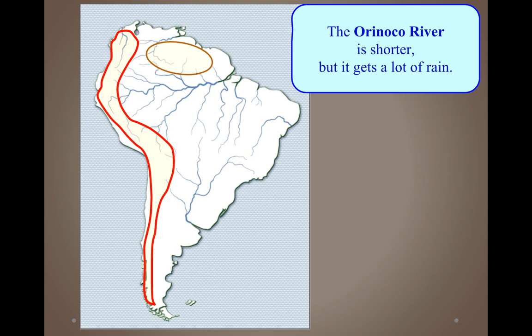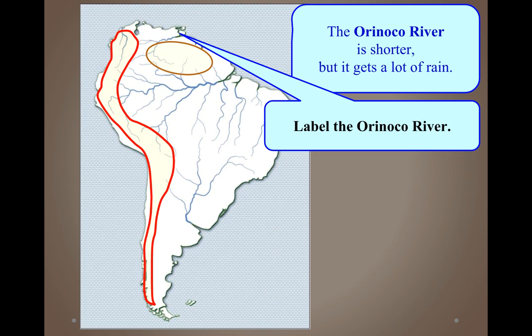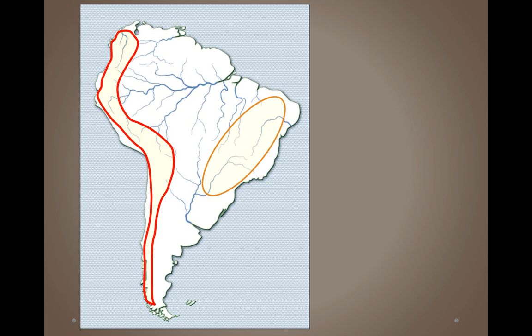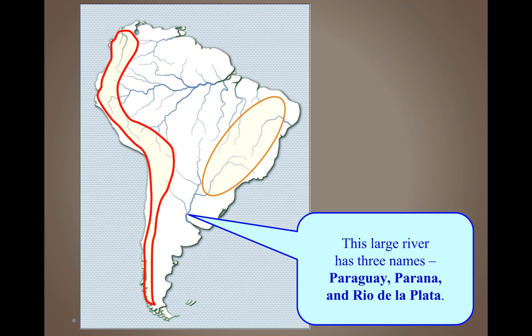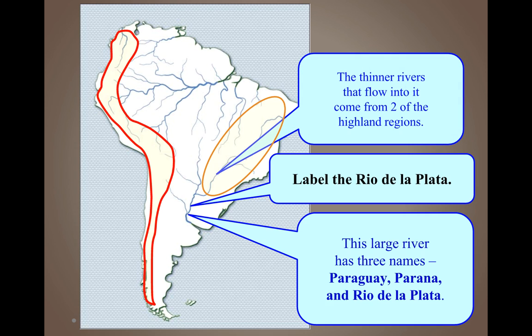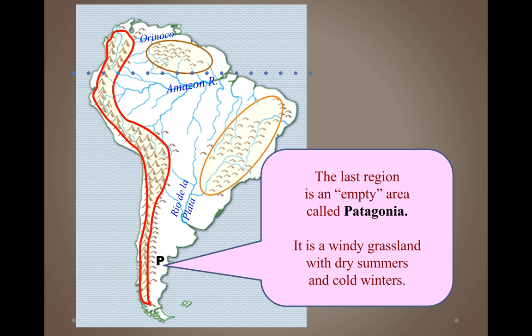The Orinoco River is shorter but gets a lot of rain, so it's quite large. It's located in the northern part of South America, with smaller rivers flowing into it from two of the highland regions. The third major river system at the bottom actually has three names — the Paraguay, the Paraná, and the Río de la Plata. Label it as the Río de la Plata. Thinner rivers flow into it from two of the southern highland regions.